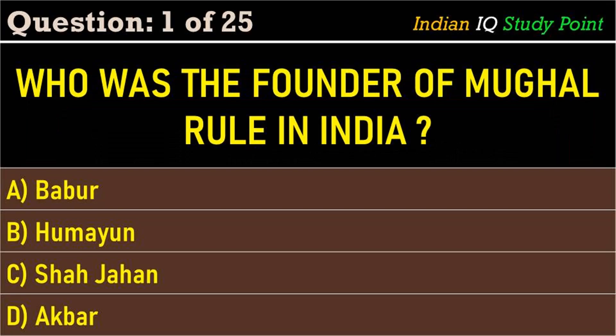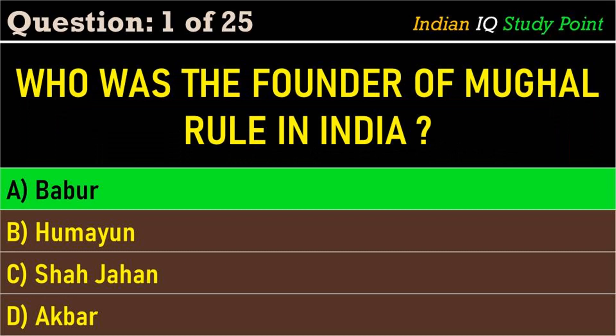Coming to the first question: who was the founder of Mughal rule in India? Option A. Babar, B. Humayun, C. Shahjahan, D. Akbar. And the correct answer is Option A. Babar.